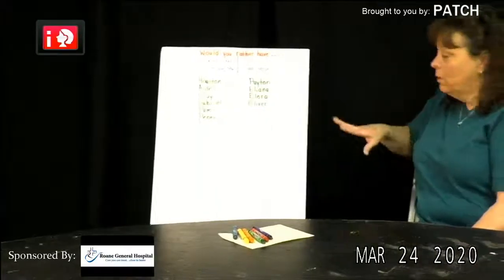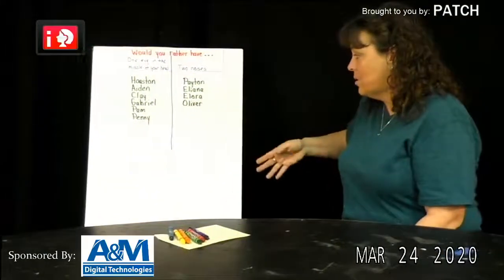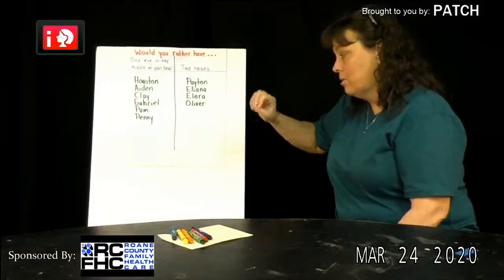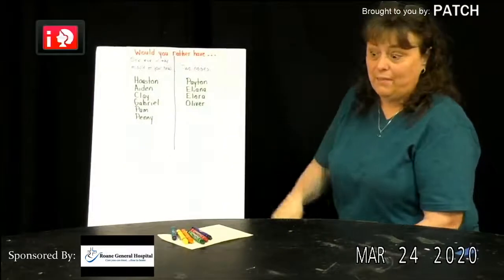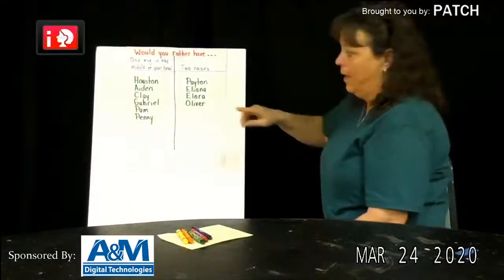So then after we go, and you can go around, like I said, ask your parents, ask your brothers and sisters. You can write their names down if you want. That helps you practice your writing and your spelling. Then when we're all done, we have to go and we have to count them. So let's count how many people wanted one eye in the middle of their head.